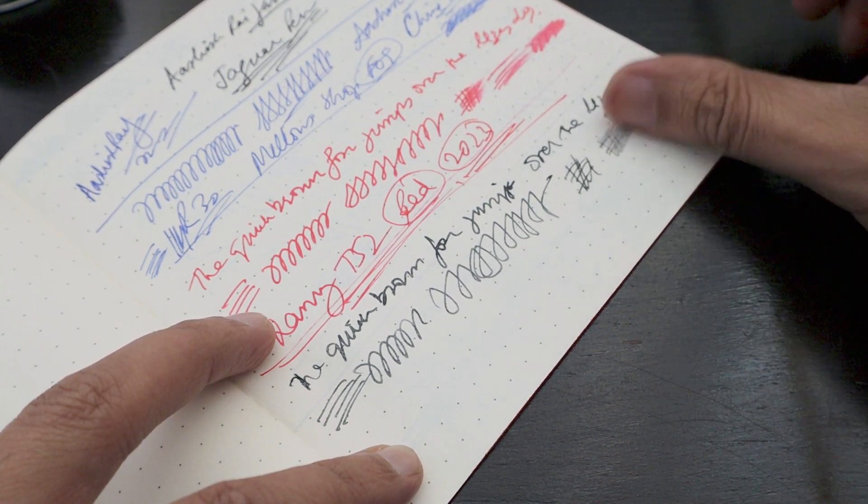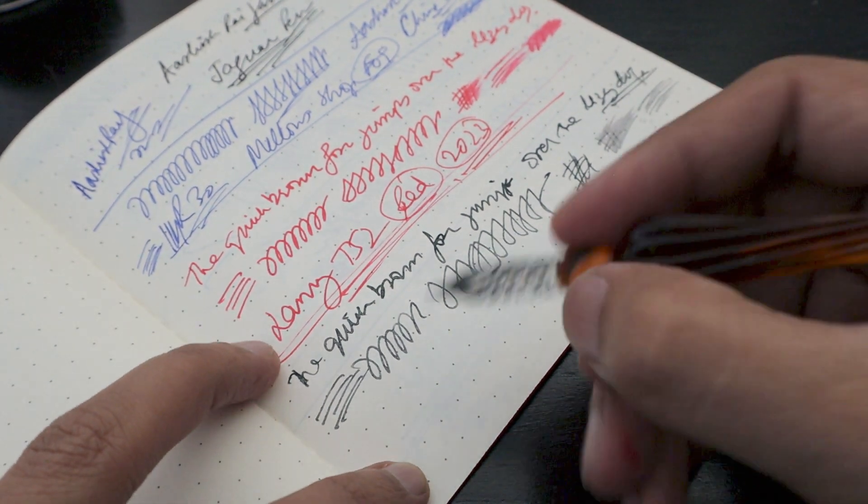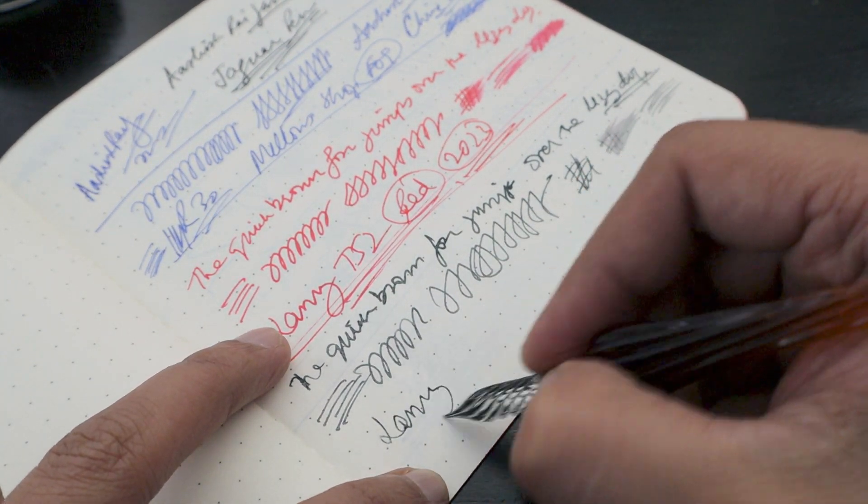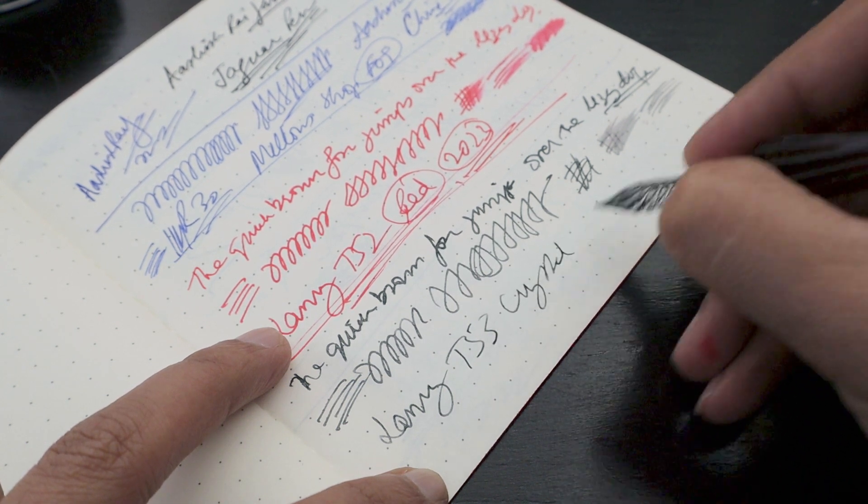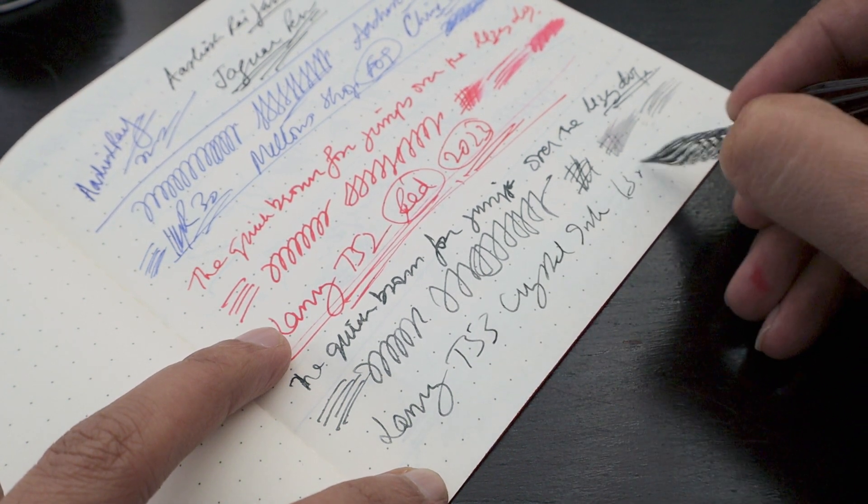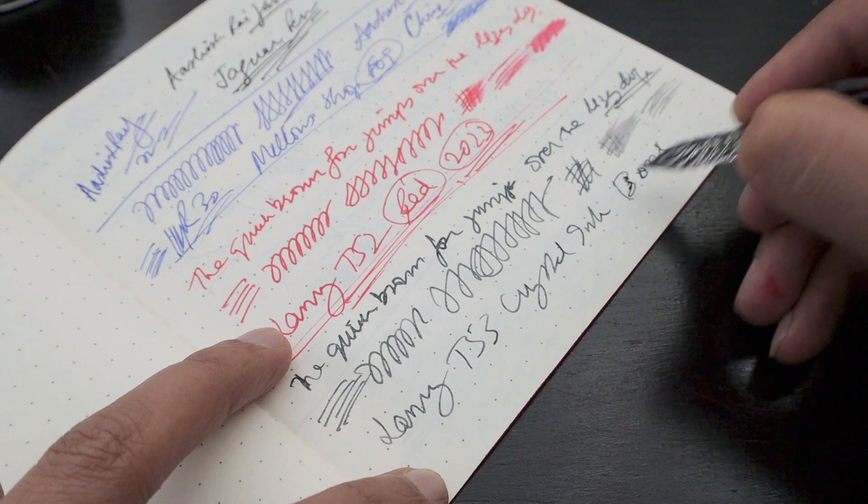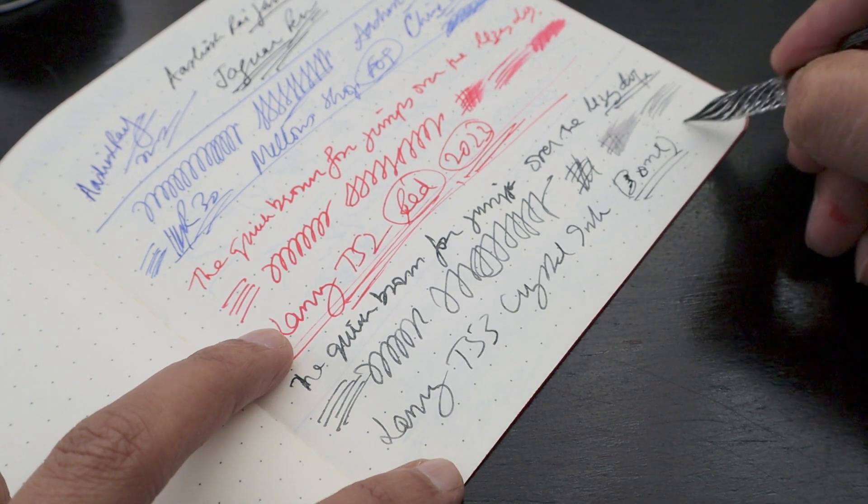This is a little lighter kind of ink and it takes a little bit of time to dry. T53 Crystal Ink in 30ml bottle. These inks come in 30ml bottles and they are expensive compared to the other inks.